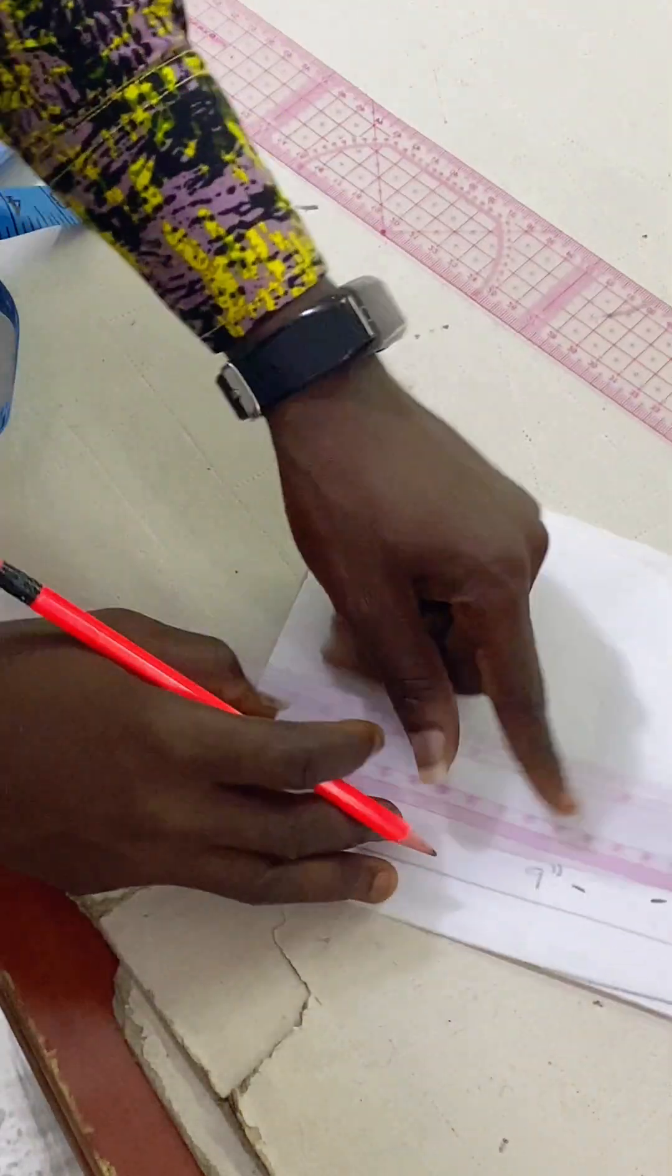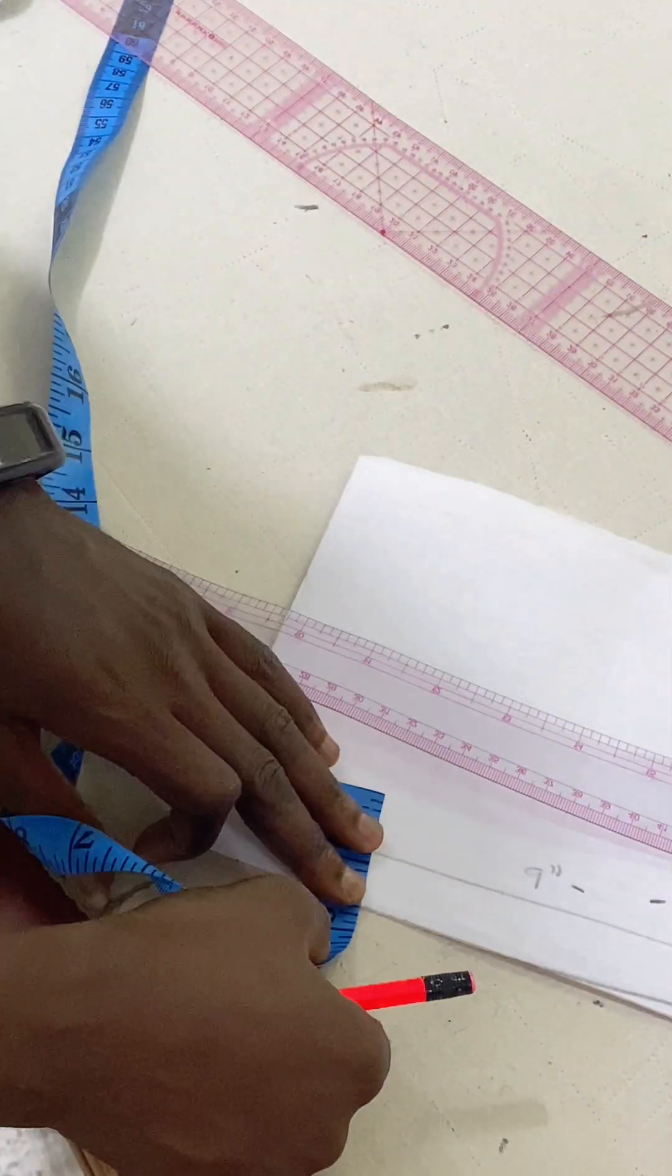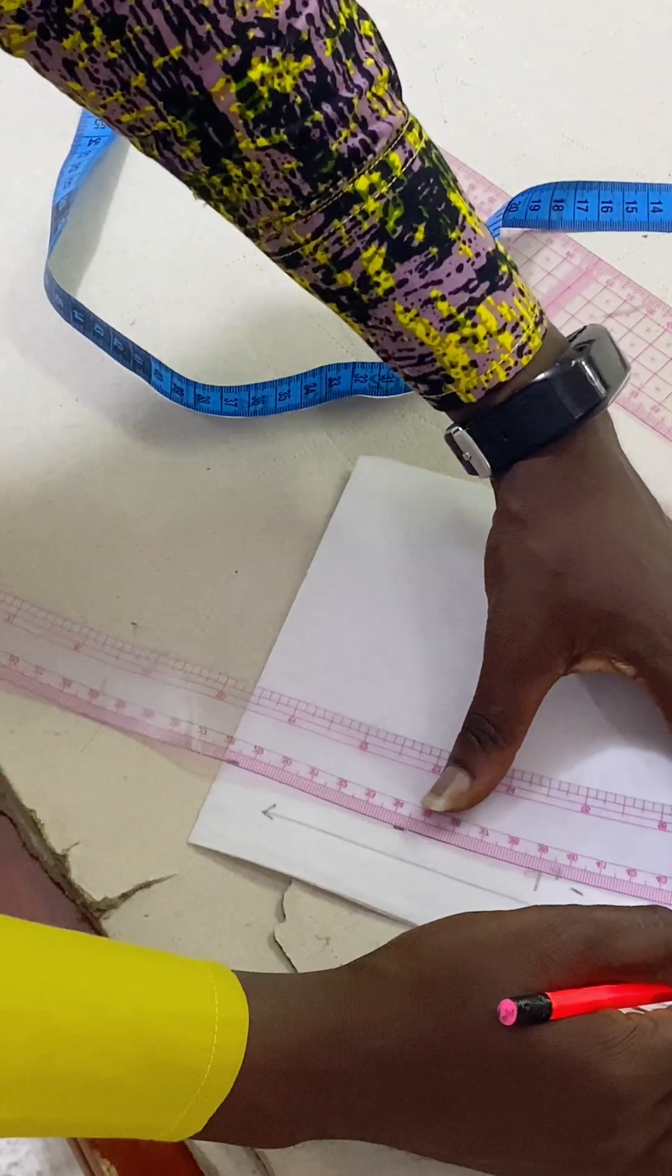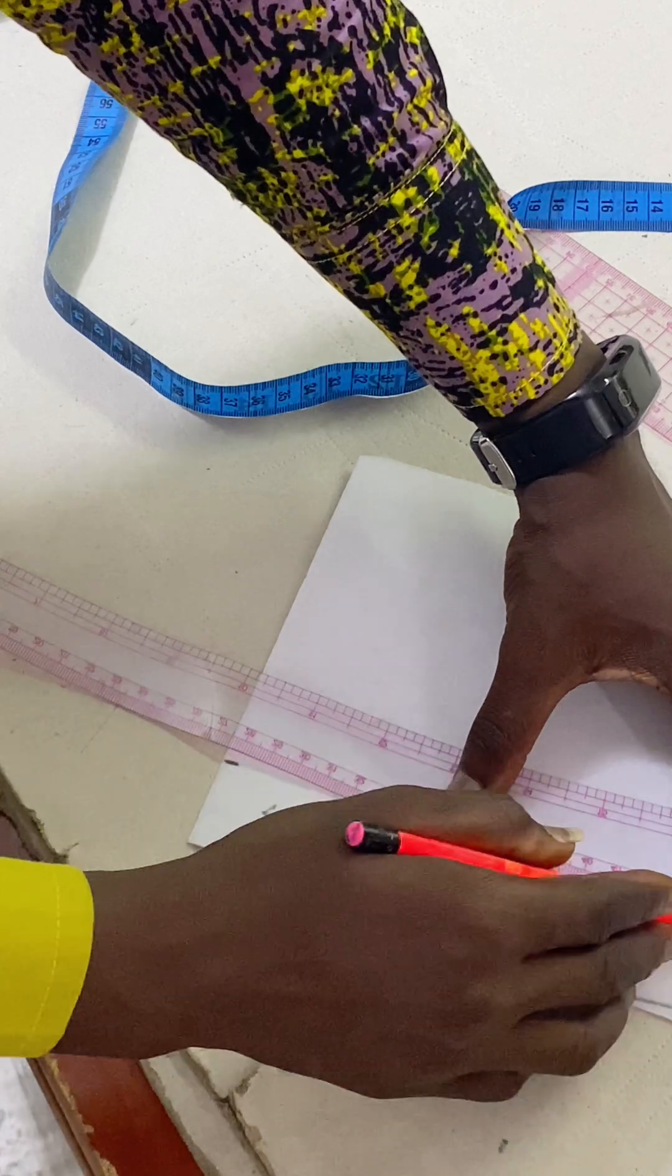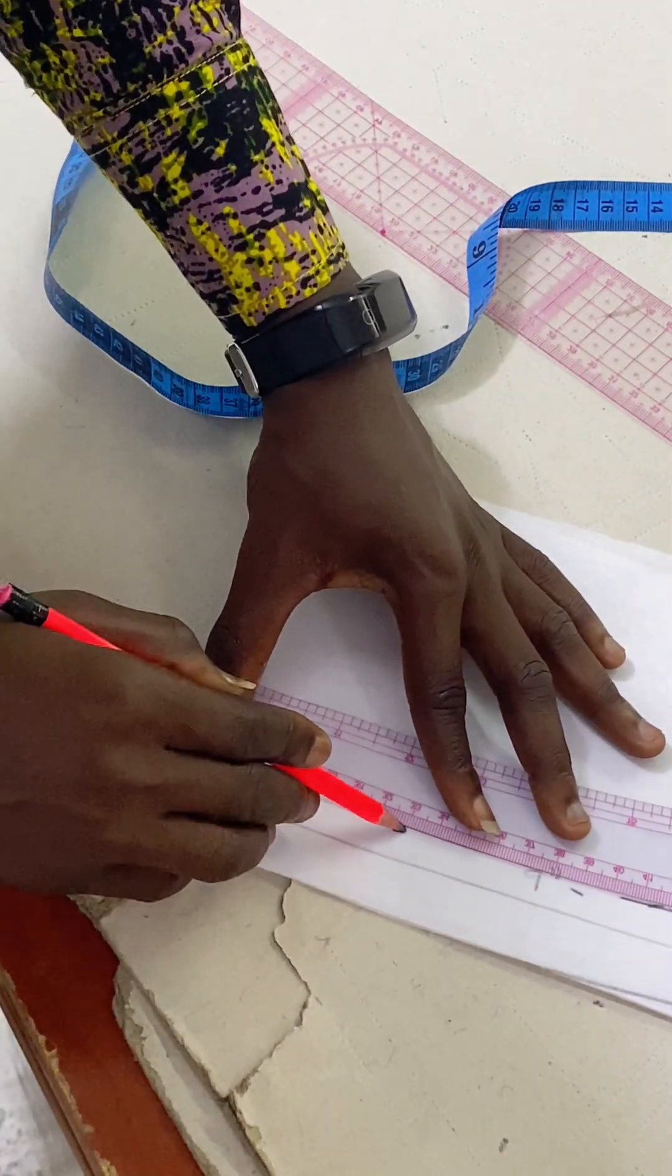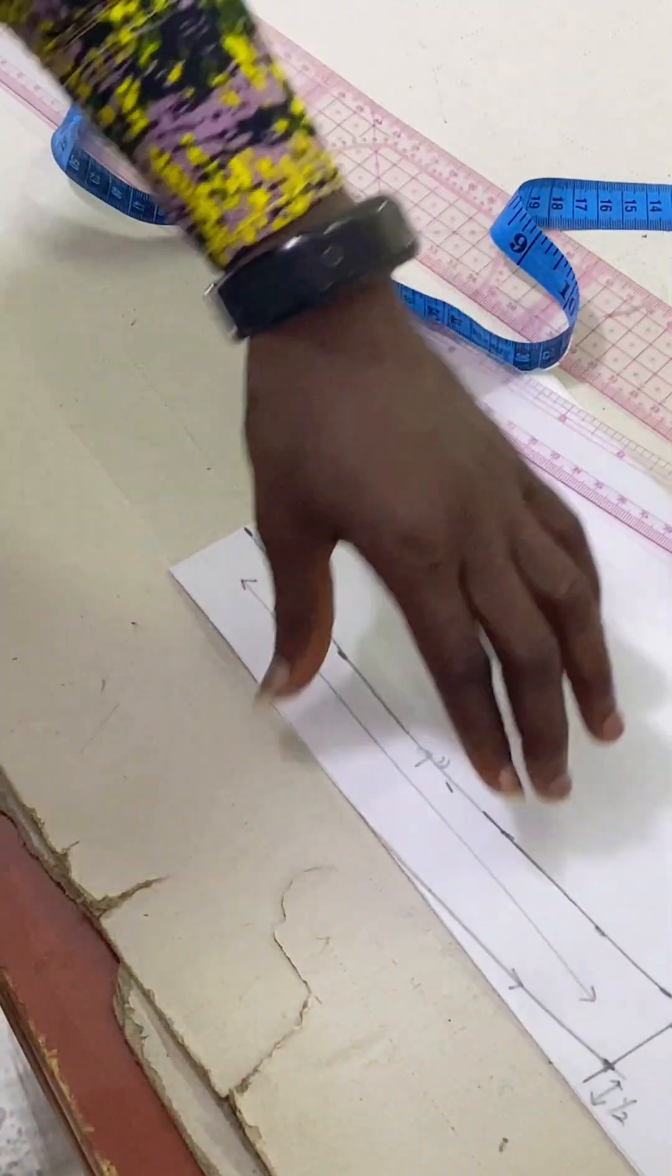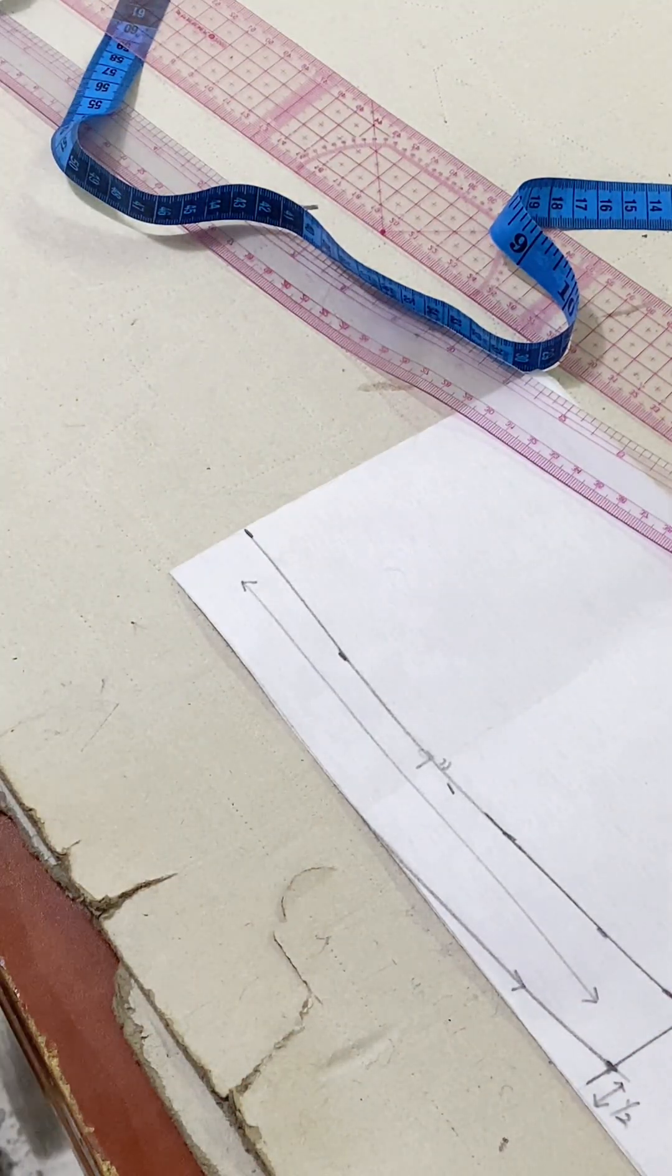And now we do our connection. We connect this together to get this. After this, you now come here one inch to draw the arc.